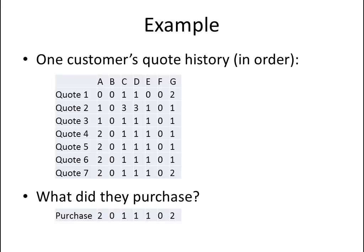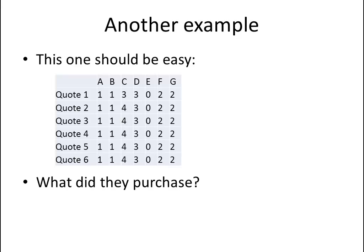As it turns out, they actually just purchased the options identical to the last quote they looked at, so that might be a useful pattern to watch out for. Here's another example. In this case, the customer looks at six different quotes, except for five of them they're looking at the same identical options. It's almost obvious what they're going to purchase — except that they purchased something they never looked at during the quoting process. Perhaps the prediction process isn't going to be so easy after all.